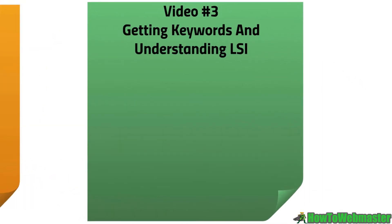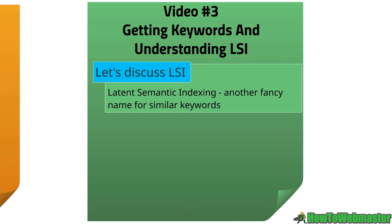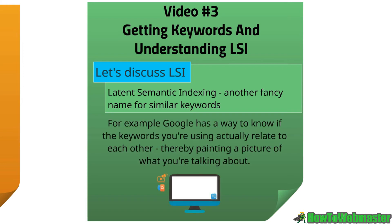Welcome back. This is video number three — now that you understand buyer keyword intent, it's time to go ahead and get some keywords, and we'll talk about understanding LSI as well, so that when you begin looking for keywords you can look for similar keywords, which is basically what LSI is all about. LSI stands for latent semantic indexing — it's just another fancy name for similar keywords. Before we go out and search for keywords, let me give you some examples. Google sends out a robot that tries to read and understand what is on your page, and if you understand this concept and can help Google out, it'll most likely categorize you in the right area.